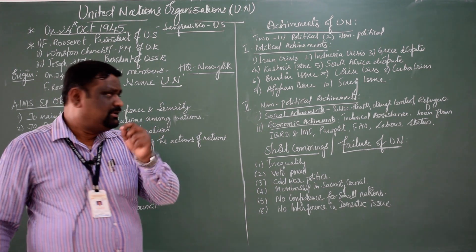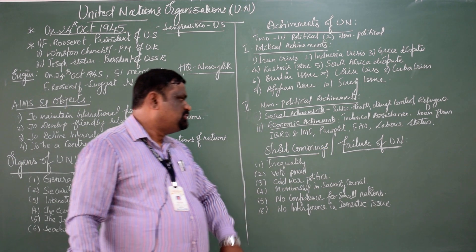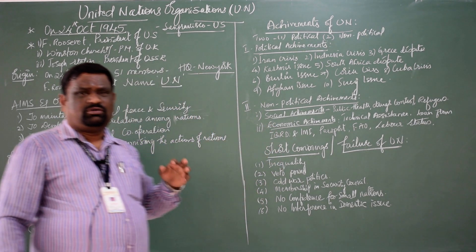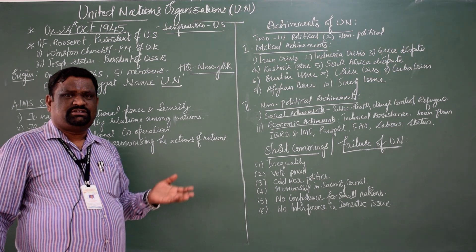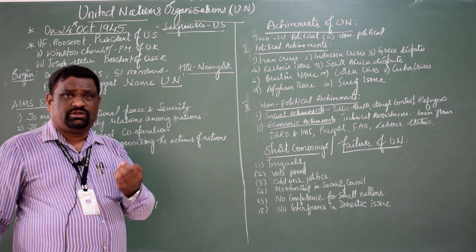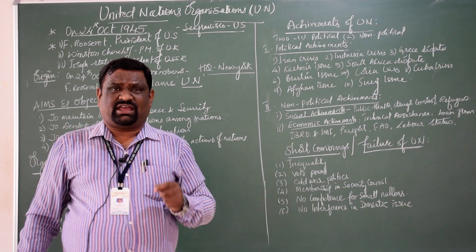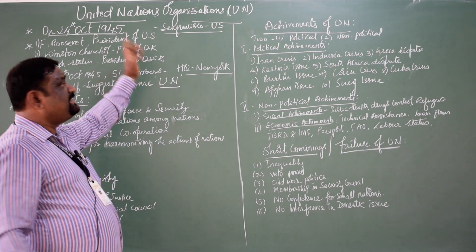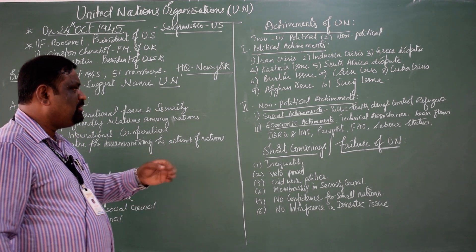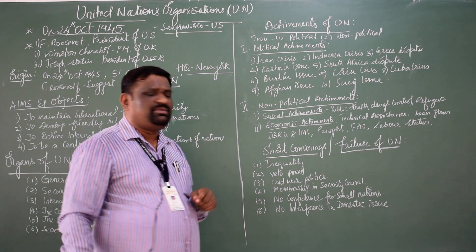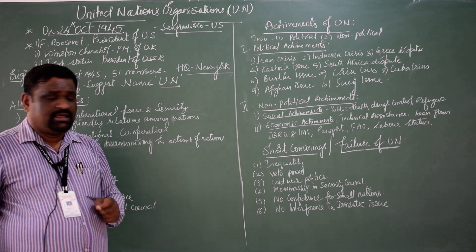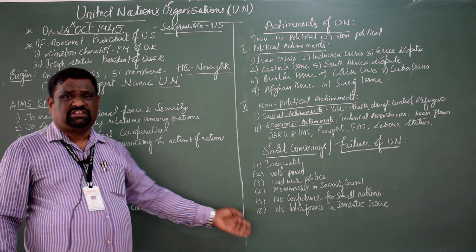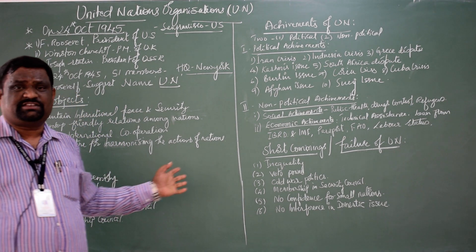Let me now move towards the shortcomings and failures of the UN. Till now we were discussing friendship and development — it is a good institution. But at the same time there are criticisms and loopholes in the United Nations organization itself. For study purposes, I have listed six failures in various aspects.